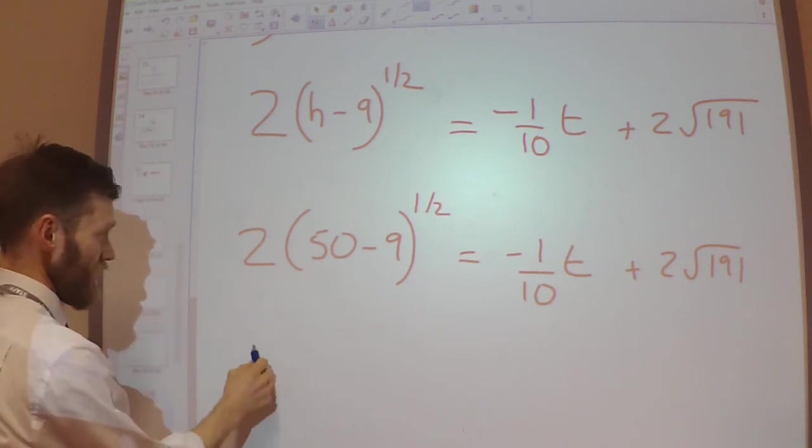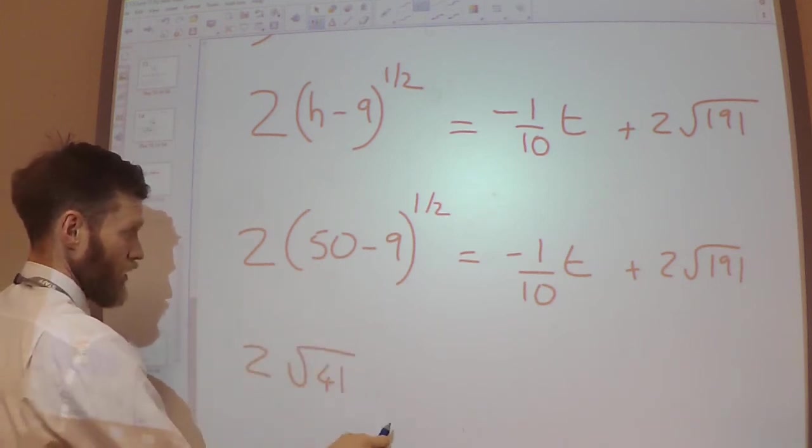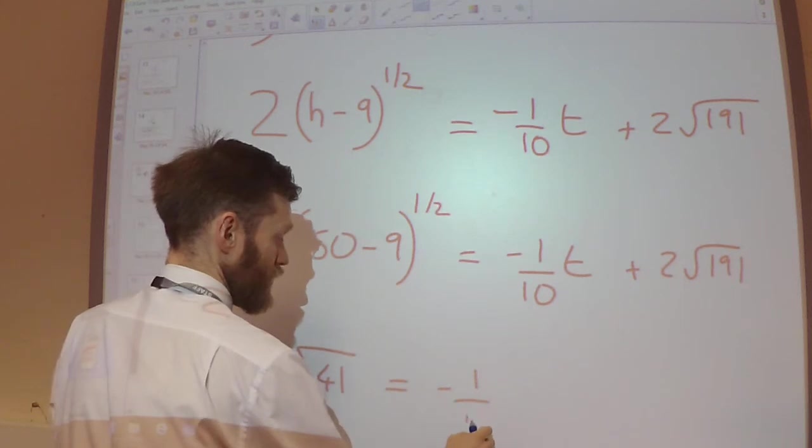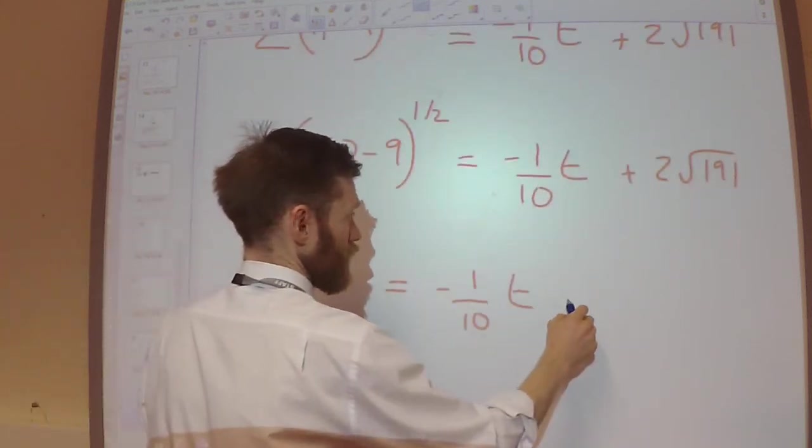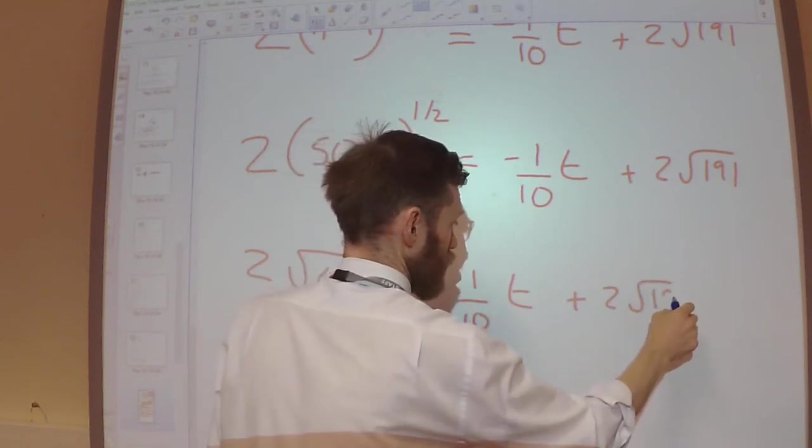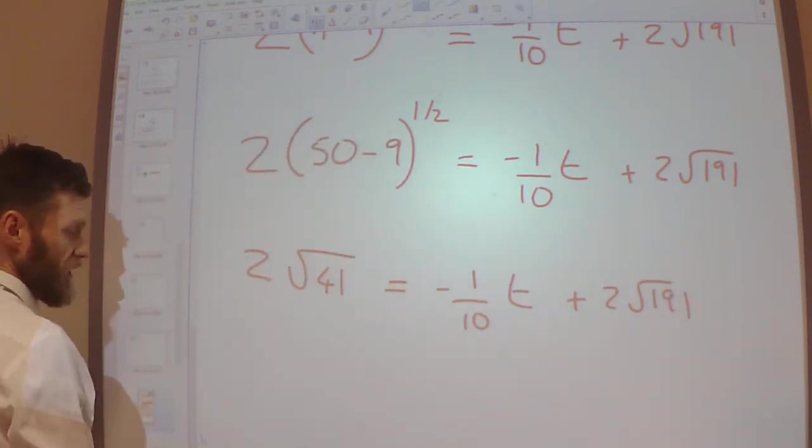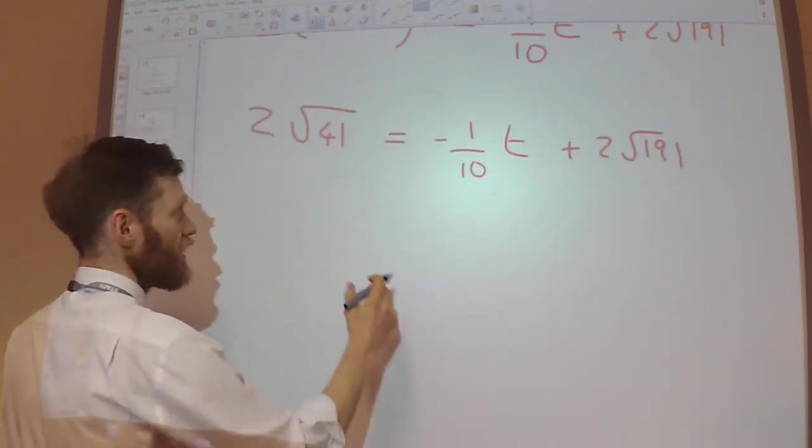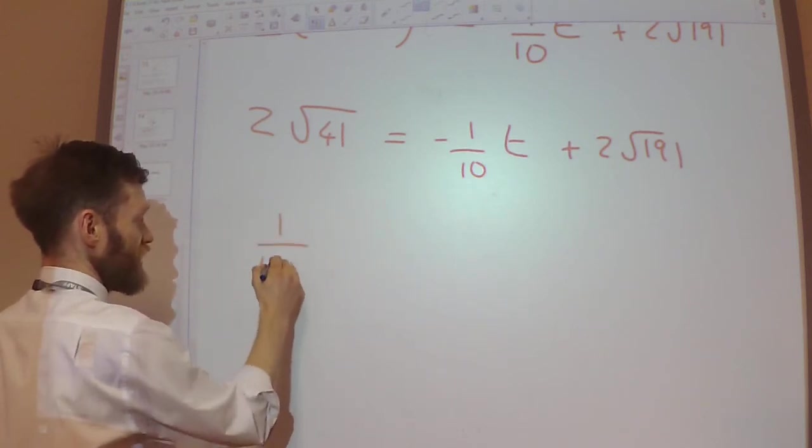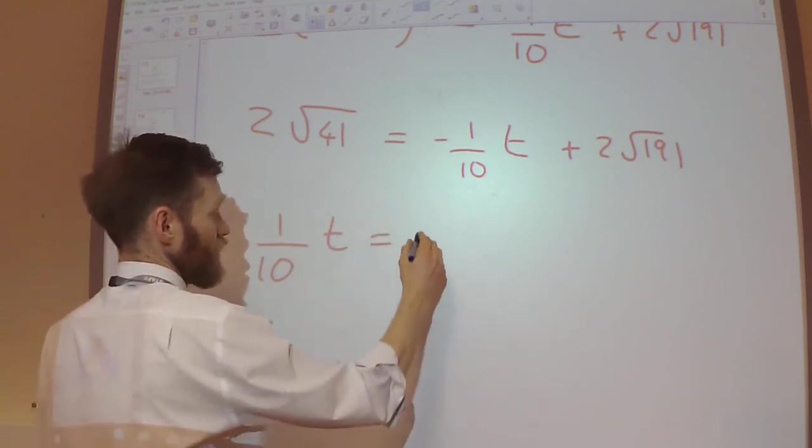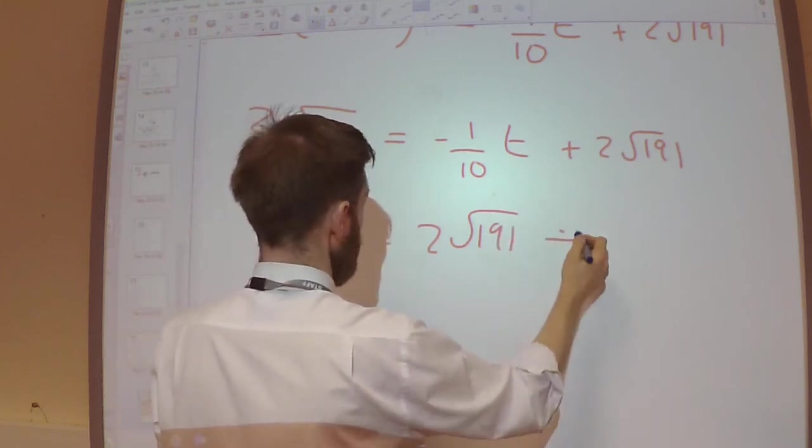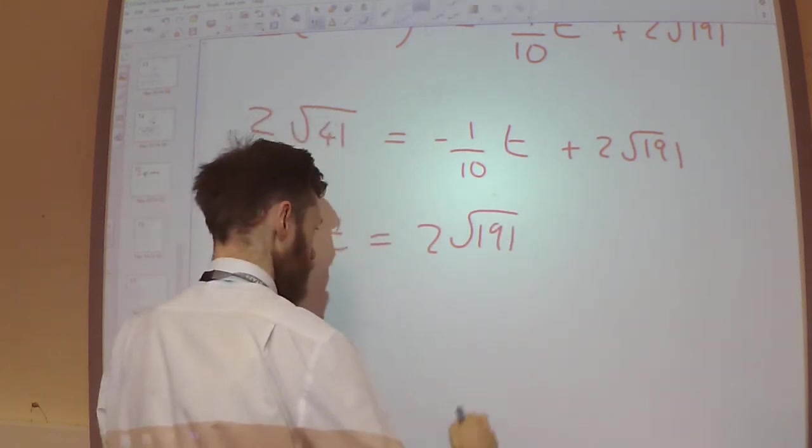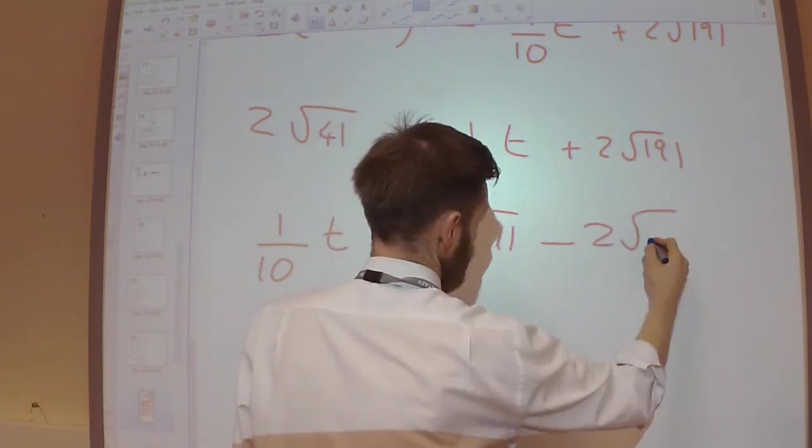So, that gives 2 root 41 equals... Let's bring this over here and bring that over there. So, I'll get 1 over 10T equals 2 root 191 minus 2 root 41.